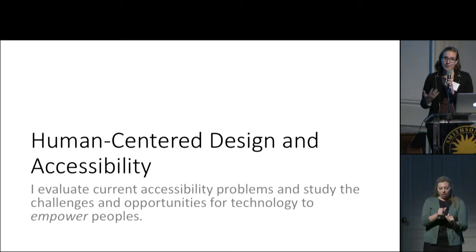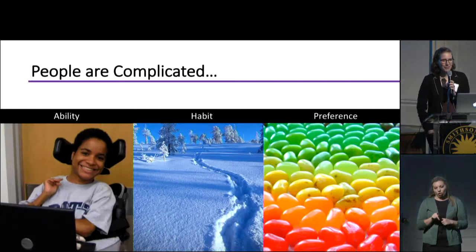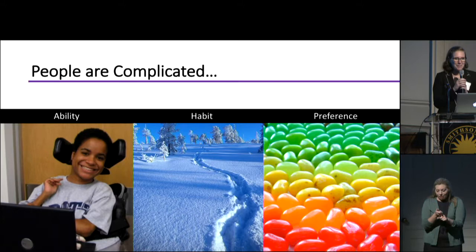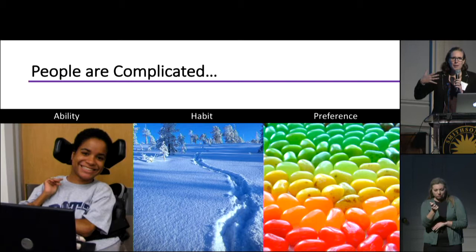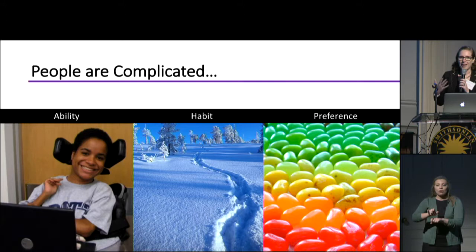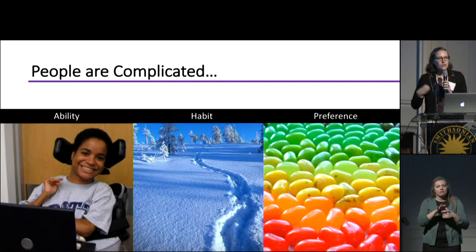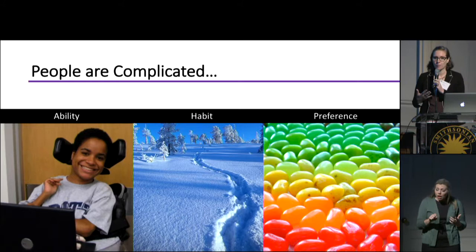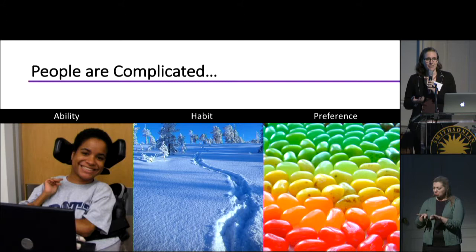I've got this word 'people' here and it turns out I will always have a job because people are very complicated. As an accessibility researcher it's important to understand individuals' ability, but I think too often we focus exclusively on ability in an accessibility context. Yes, ability is very important if we want to empower people and solve accessibility challenges. However, we also need to understand these individuals' habits and their preferences and probably many other factors that are relevant.